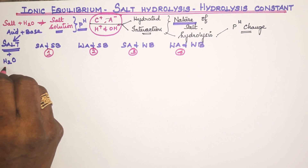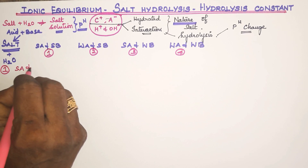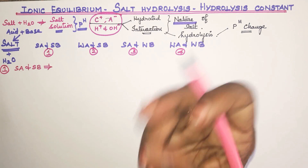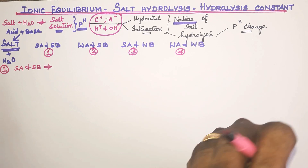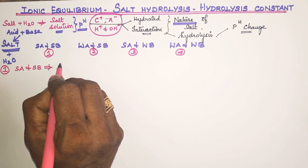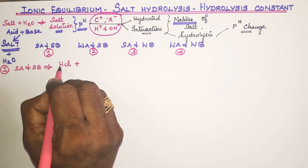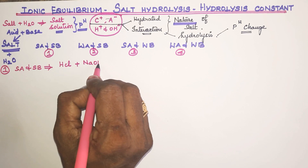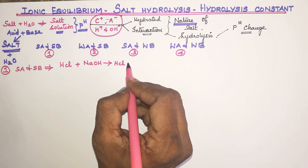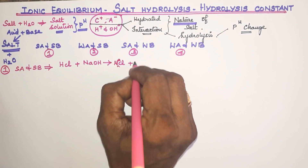The first case is strong acid and strong base. To understand this, we need to know examples of each. A strong acid is hydrochloric acid (HCl). A strong base is sodium hydroxide (NaOH). These react to form a salt.